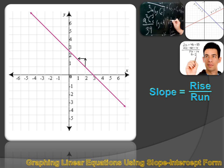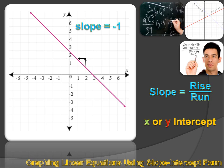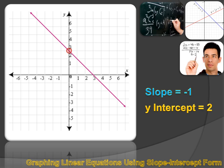For instance, on this line, I rise positive 1 and I run negative 1. So my slope is 1 over negative 1, or a slope of negative 1. How about intercepts? There can be either an x-intercept or a y-intercept — that's just where the line crosses the x or the y-axis. The green circle marks where the line crosses the x-axis — that's the x-intercept. The red circle is where the line crosses the y-axis — that's the y-intercept.